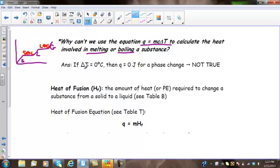So, they're saying here, if delta T equals zero, then Q equals zero joules for a phase change, which is not true. Because you know that if you had Q equals MC delta T, and you put a zero in for delta T, because there's no change in temperature, then anything times zero is zero. And we know that at a phase change, there is definitely energy that's being absorbed, because the molecules need the energy to change from one phase to the next phase. So, we need to use a different formula.